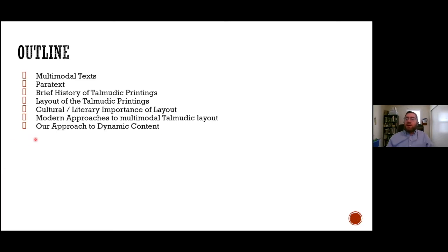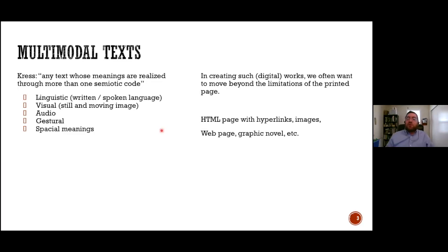Briefly, let's get a definition of multimodal. A text is multimodal if its meanings are realized through more than one semiotic code. These different ways of imparting meaning can include linguistic via written or spoken language, visual via still or moving image, audio, gestural, and spatial meanings. In creating such digital works, we often want to move beyond the limitations of the printed page — for example, embedding relevant images or relating information via hyperlinks to allow non-linear explanation of the text.